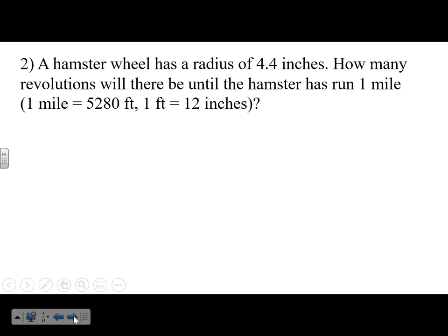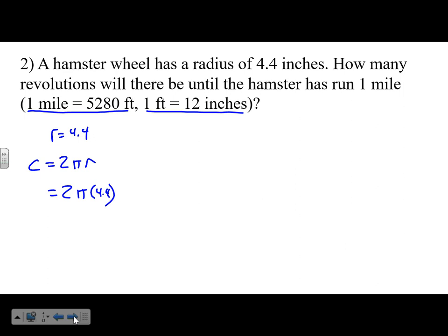Problem two: A hamster wheel has a radius of 4.4 inches. How many revolutions will it take until the hamster has gone one mile? Given conversions: one mile = 5,280 feet, one foot = 12 inches. First, find circumference per revolution: 2 times pi times 4.4 = 27.6 inches every revolution.